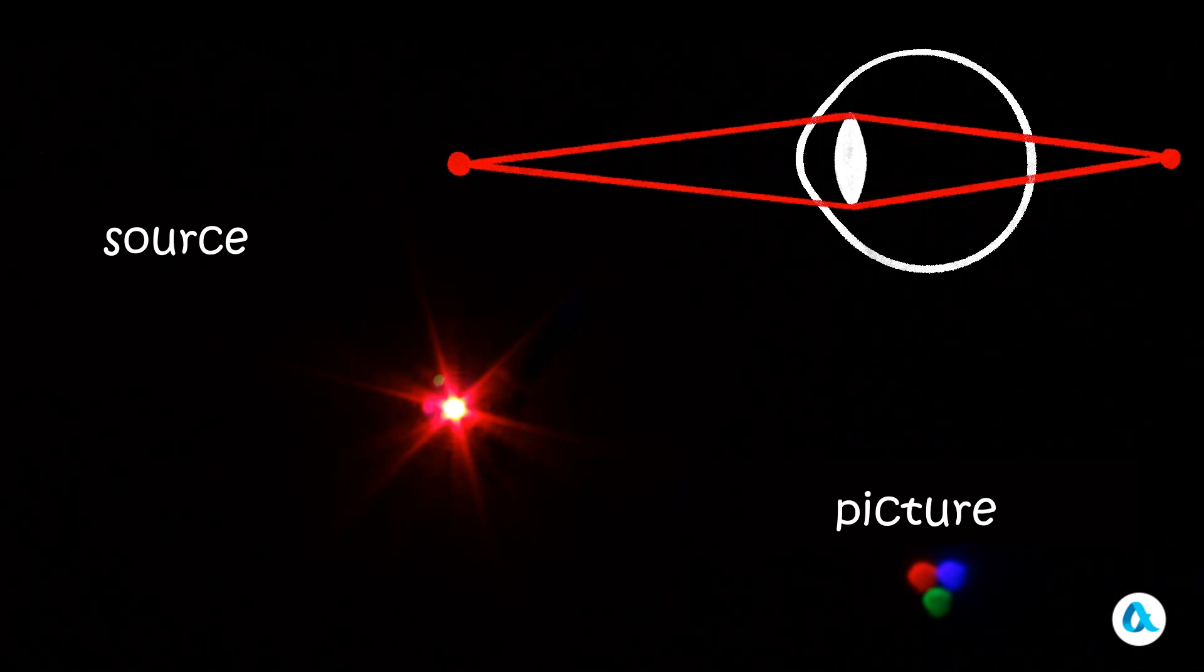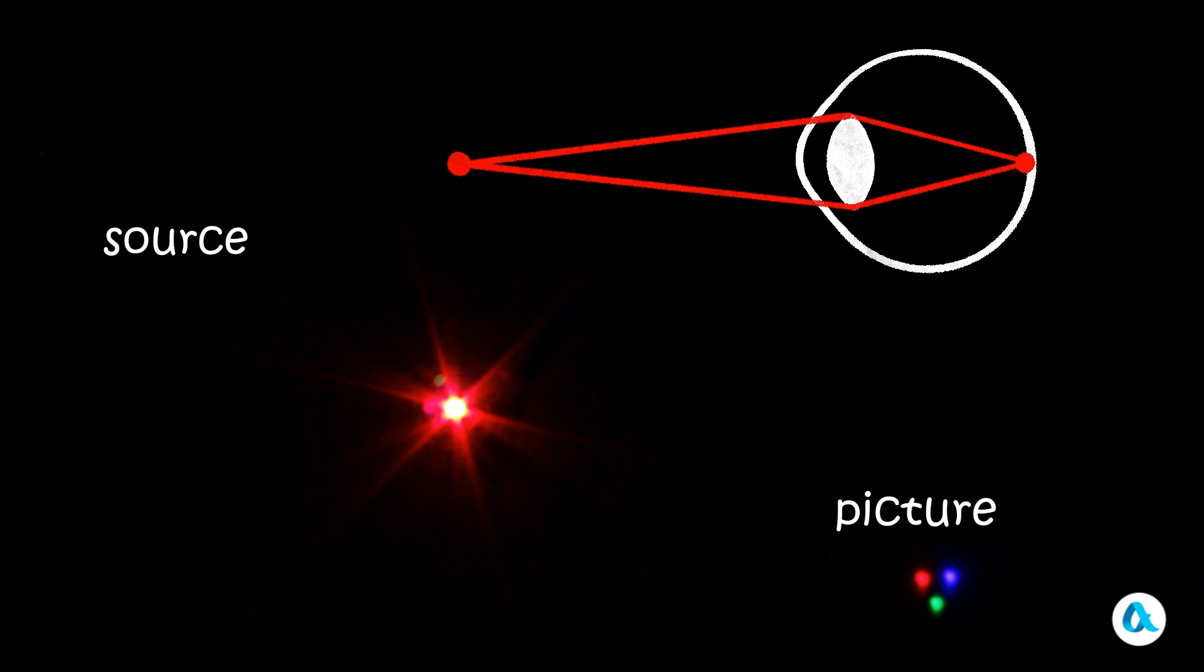And to focus them, we need to increase the optical power of the lens. And for that, you've got to increase its curvature, which I'm about to do by increasing the pressure inside the lens. And all of a sudden, the picture once again became incredibly sharp and clear.